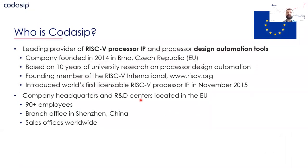Codasip is a leading provider of RISC-V processor IPs and the tools by which you can customize these IPs. You can take the RISC-V IP as it is and use it as is, or you can modify it using our tools to have some unique selling point in your product. The company was founded back in 2014 in Brno, Czech Republic, but the technology is based on more than 10 years of university research. We are founding members of RISC-V International and introduced the first RISC-V IP license in November 2015.